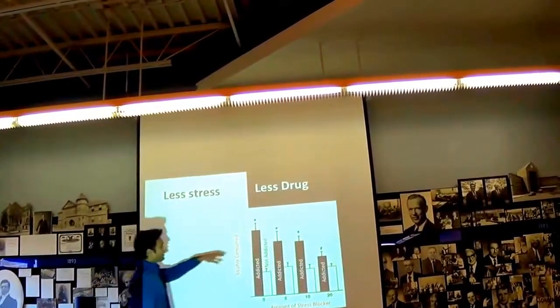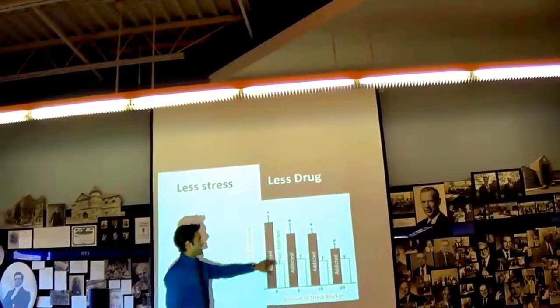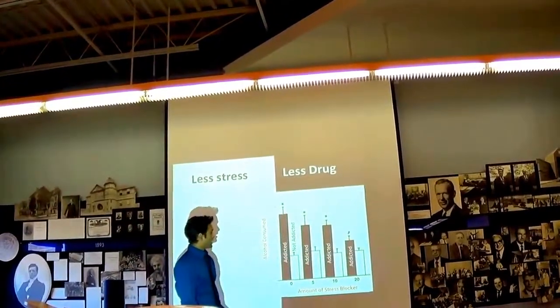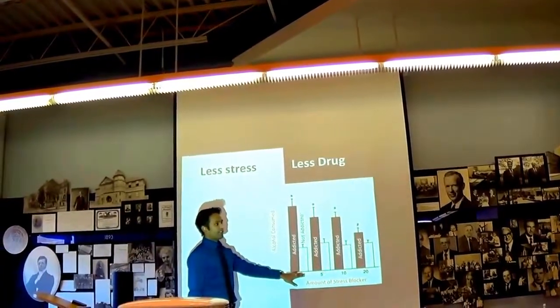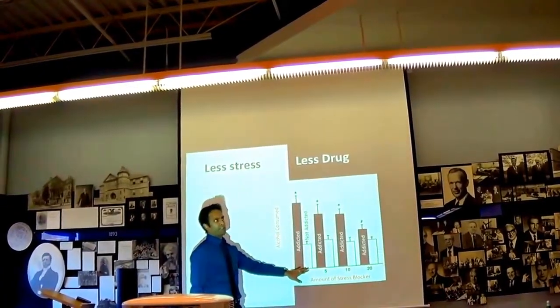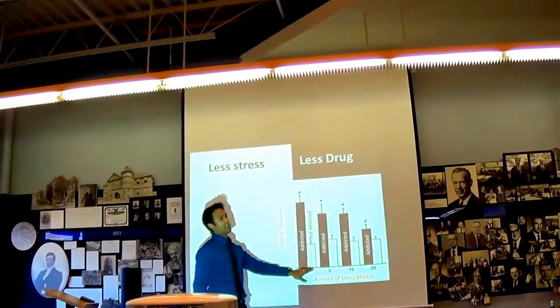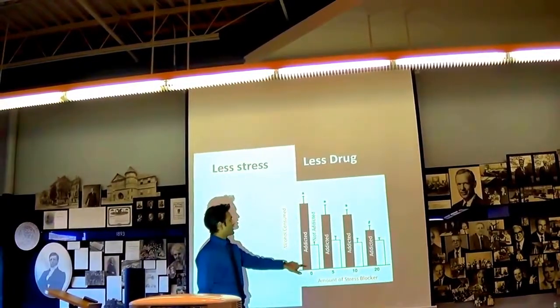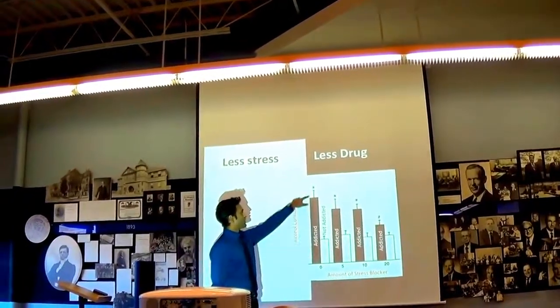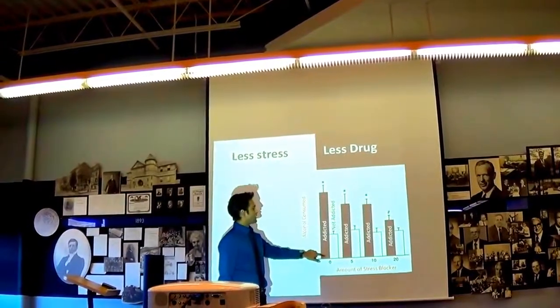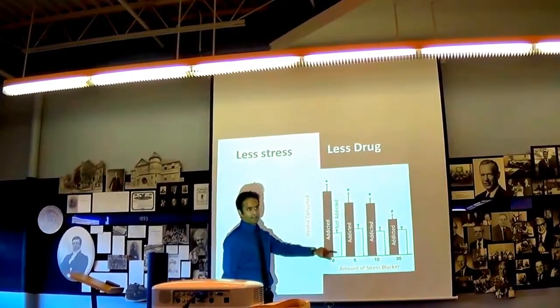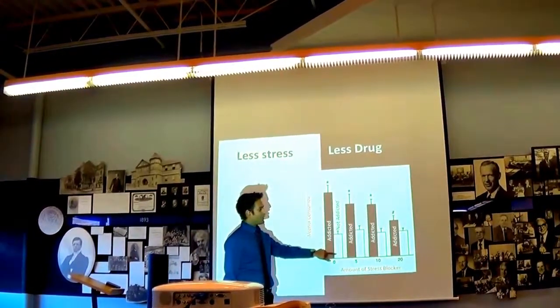What you can see here is the idea of stress. These are addicted rats in black and these are non-addicted rats in white. At this point they have not been fed anything, there's no treatment. This is the level of drug use in an addicted rat, this is the level in a non-addicted rat.